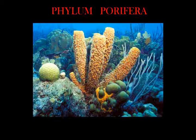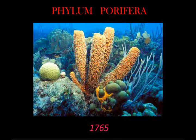Historically, the sessile nature of sponges and their amorphous way of growing made the first naturalists believe that sponges were plants. Just in 1765, when their water streams were described, they were recognized as animals.